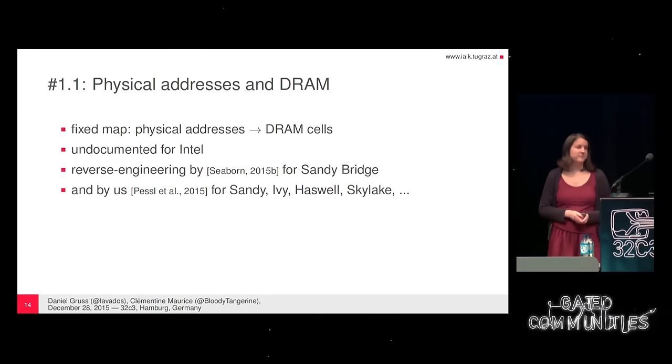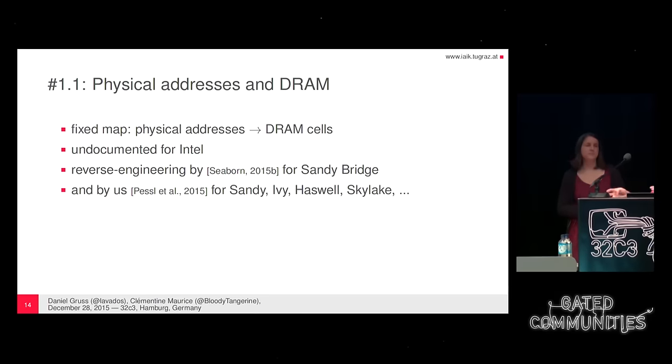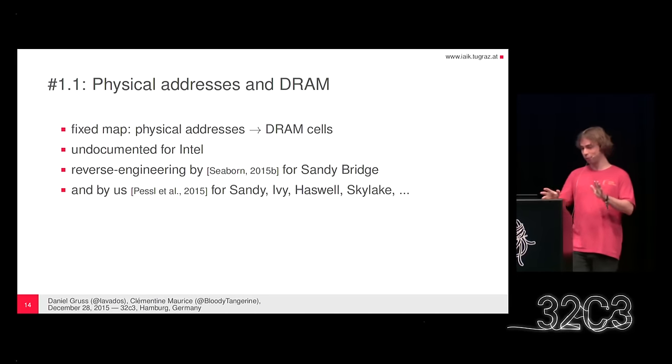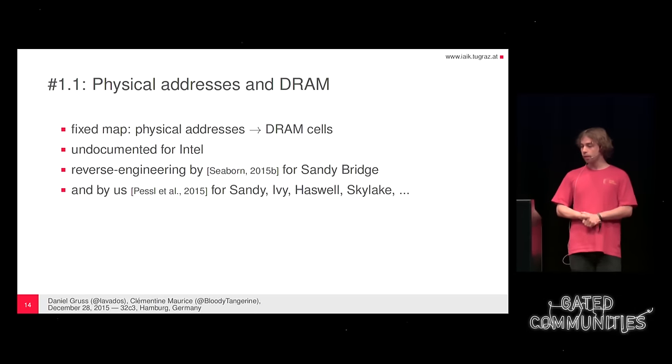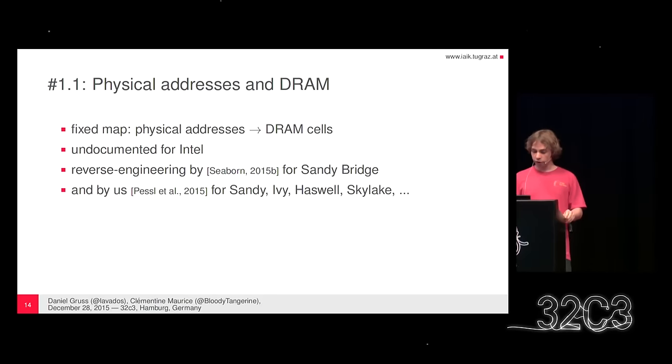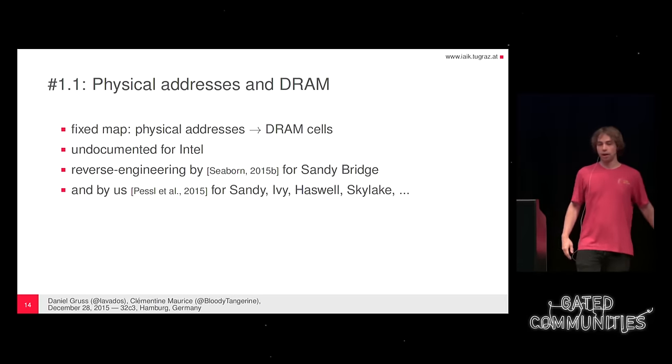There is a fixed mapping from physical addresses to DRAM cells, but unfortunately it is not documented by Intel. Mark Seaborn reverse-engineered the mapping function for Sandy Bridge earlier this year, and we continued this reverse engineering for Sandy Bridge, Ivy Bridge, Skylake, and different configurations. The row buffer serves as a cache and accessing something from the current row buffer takes a different time than from another row — a row conflict takes much more time — and you can exploit this timing information to build another attack. But let's stay with physical addresses for now.